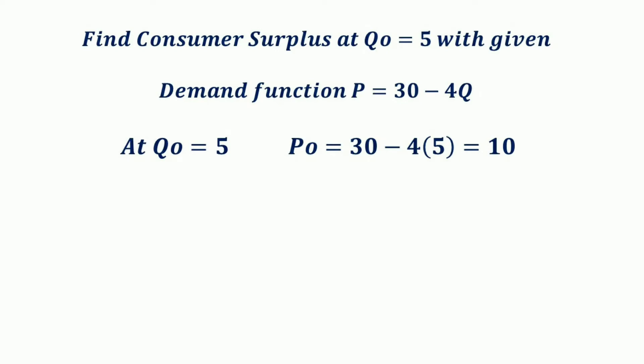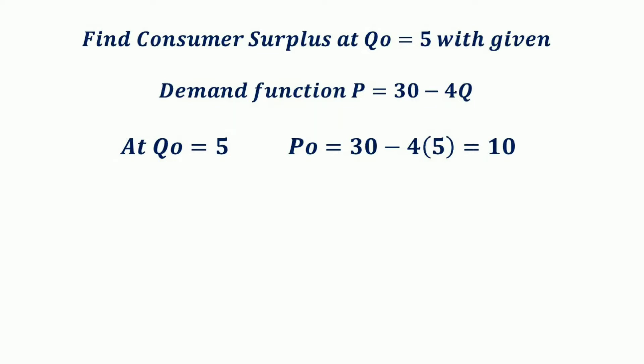Consider a numerical example. Given the demand function P = 30 minus 4Q, and assuming that the equilibrium quantity Q₀ is equal to 5, we want to find the consumer surplus.